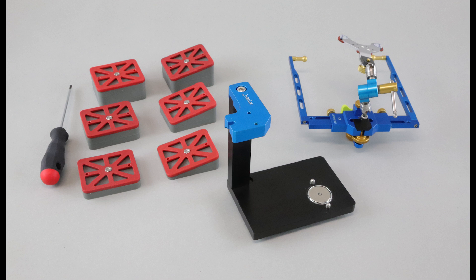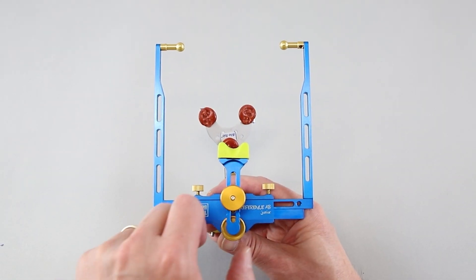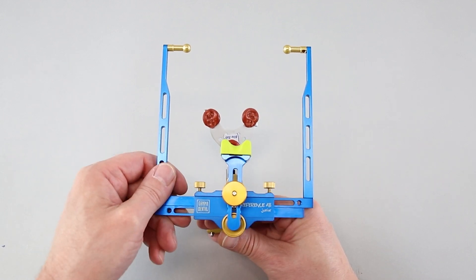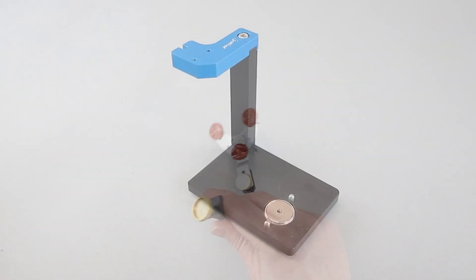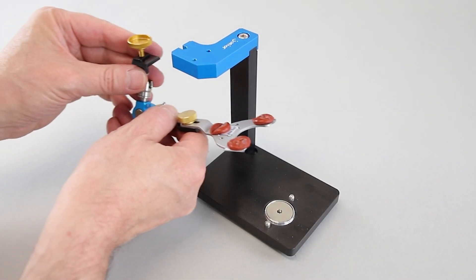The distance block plus mounting plate serve as transfer table. Remove the 3D joint support from the Reference AB Jr. face bow and mount it into the Transfer Stand AB Jr.